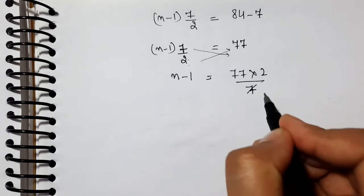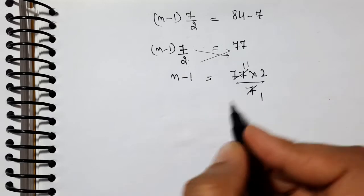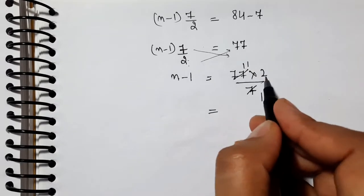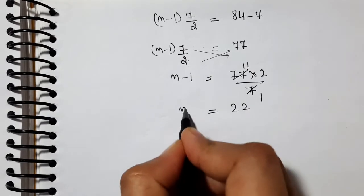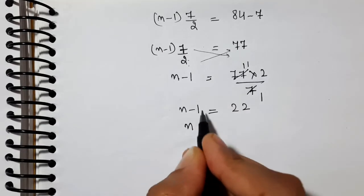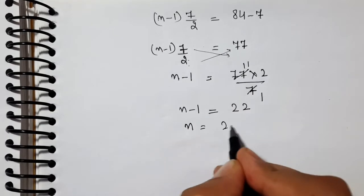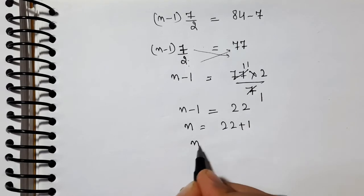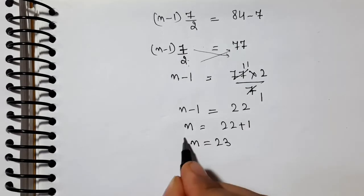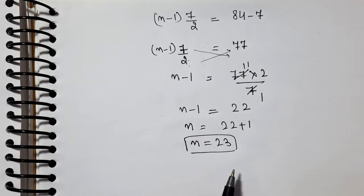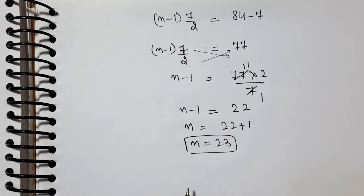This is the formula. We'll put this formula here: a plus (n minus 1) times d. In place of a_n, we have the given nth term 84. So here, a value is 7 plus n we have to find out, d value is 7 by 2, equals 84. Then solve this. 7 goes to the other side as minus. n minus 1 times 7 by 2 equals 84 minus 7.